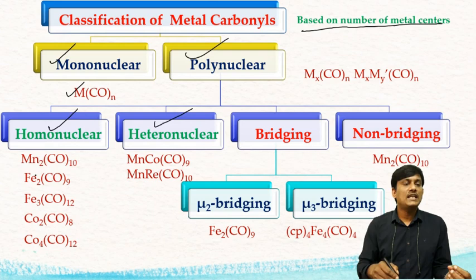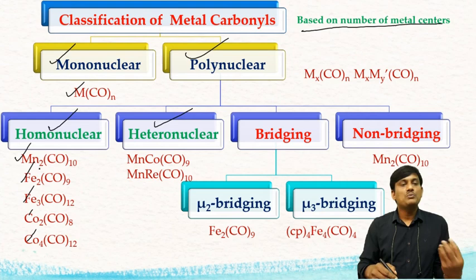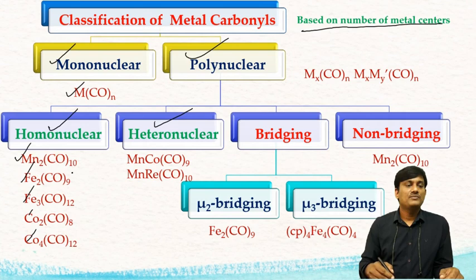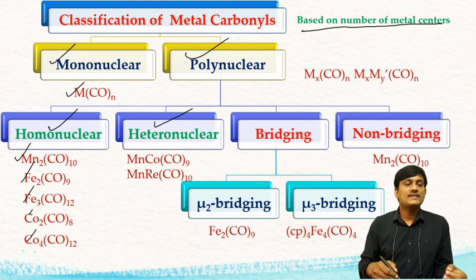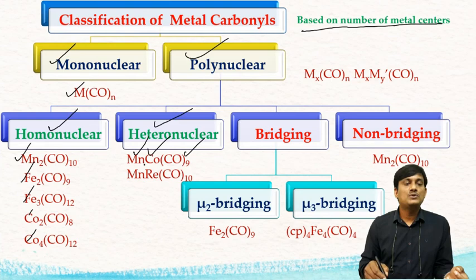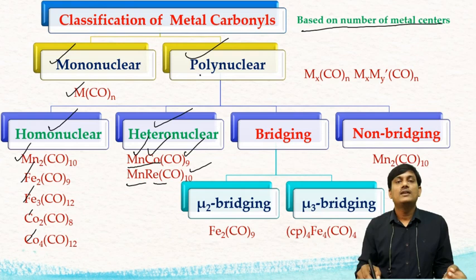In homonuclear polynuclear metal carbonyls, all metals are the same type. Examples are Mn₂(CO)₁₀, Fe₂(CO)₉, Fe₃(CO)₁₂, Co₂(CO)₈, and Co₄(CO)₁₂ — all are homonuclear metal carbonyls. In heteronuclear polynuclear metal carbonyls, you can find two or more different types of metals. Examples include MnCo(CO)₉, which contains manganese and cobalt, and MnRe(CO)₁₀, which contains manganese and rhenium — two different metals.